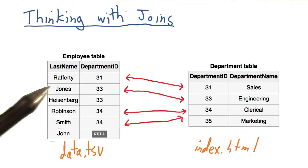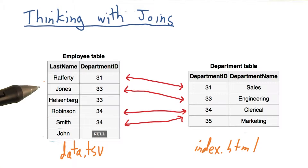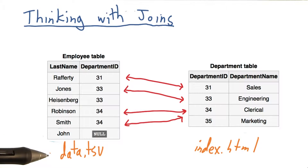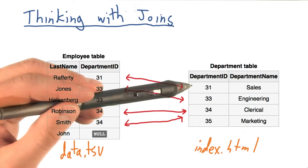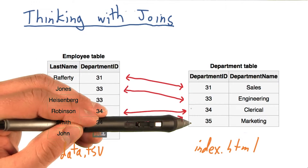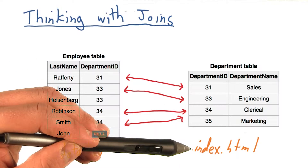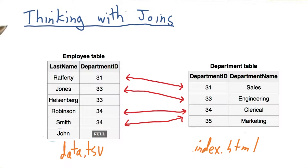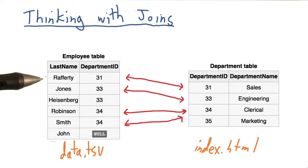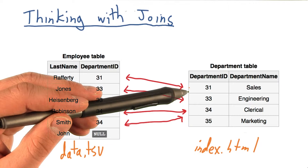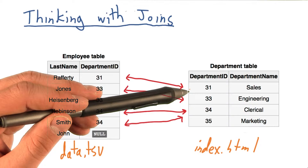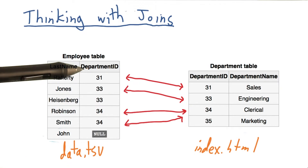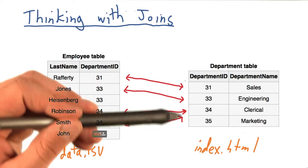This is very similar to how D3 does its joins. In the case of two tables, think of table 1 as our data file — in this case, data.tsv — where every row is a row in our file. Table 2 represents all the HTML and SVG elements on our web page. When we perform that magical data join, we simply associate every row in our data file with the corresponding element on our web page. In the case of our scatter plot, we are adding circles, based on some common key that associates the two elements.